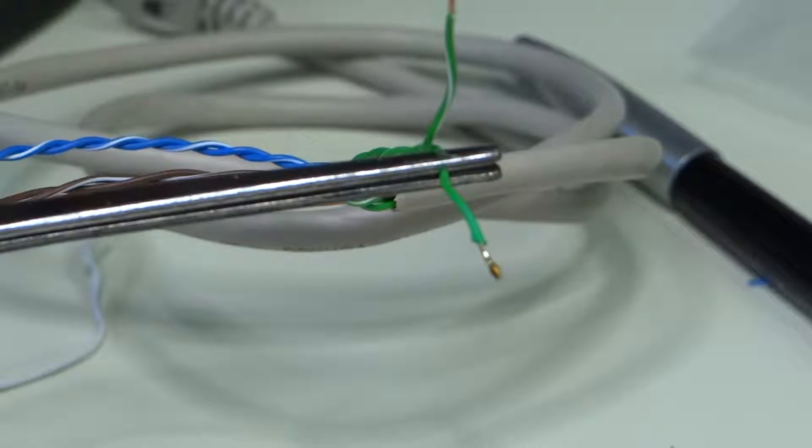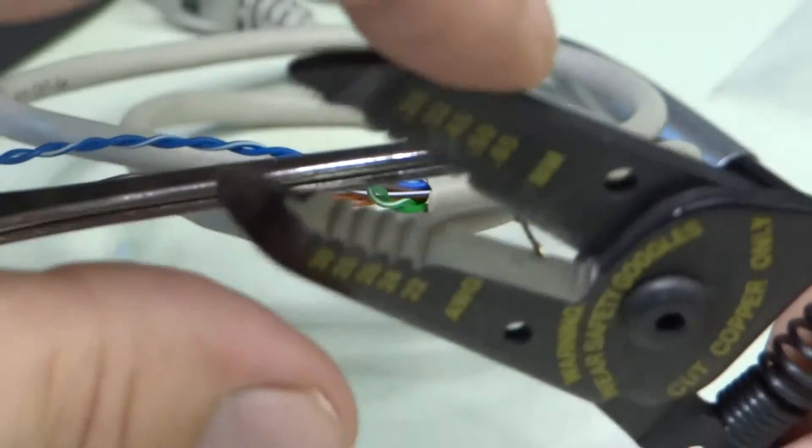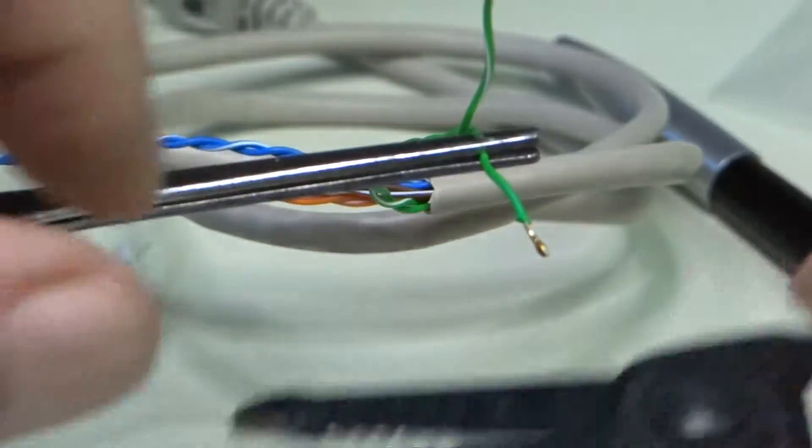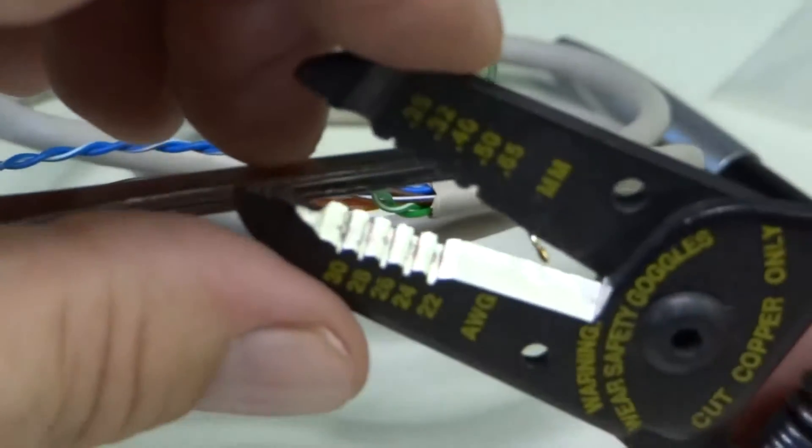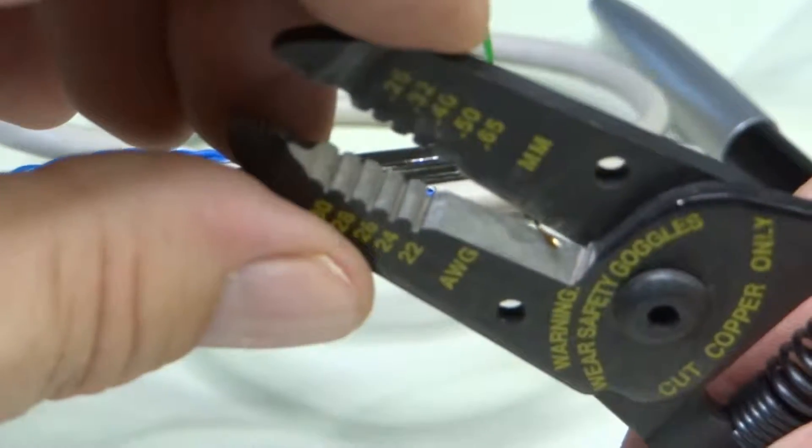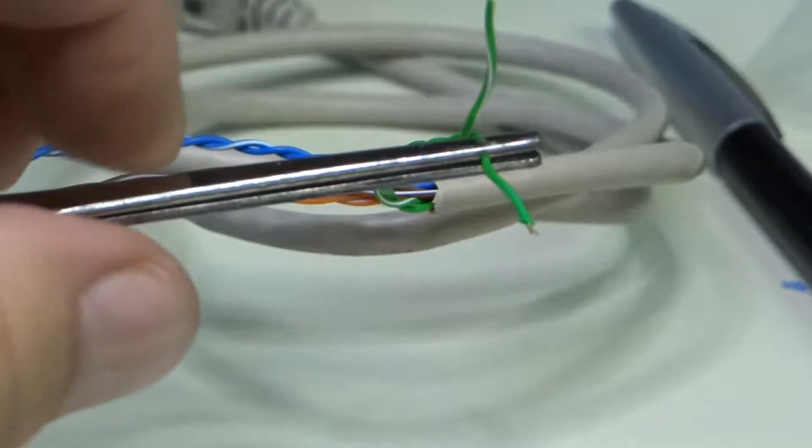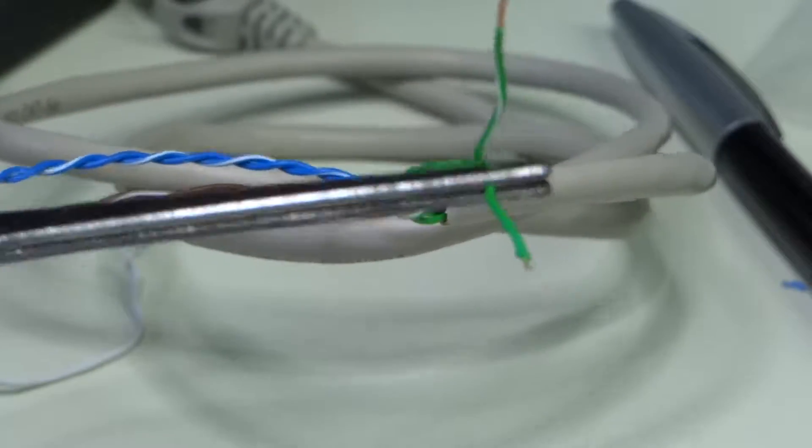And then we need to cut the end off. You're just going to want just a tiny little bit of that tin wire hanging off the edge there outside of the insulation. Just a tiny, tiny bit.